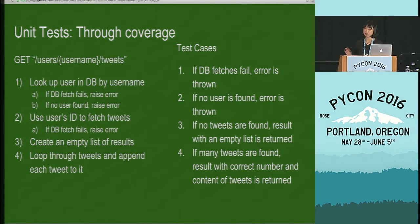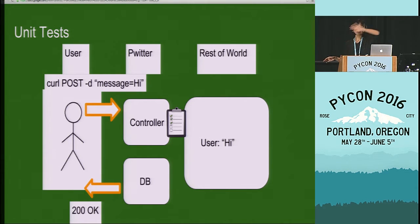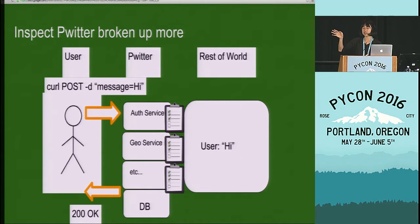Unit tests help you sleep at night knowing that every scenario is handled. Every code repo has its own set of unit tests that are written side by side with the code. Developers run tests to make sure that if they add a new feature into that repo, they won't break something in the existing code base. The unit tests cover every feature in that repo. And if your service is broken up into many different repos — the geography service, the auth service — each has its own full set of unit tests that are run before a new feature is added.